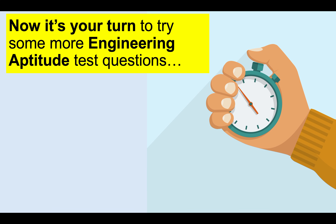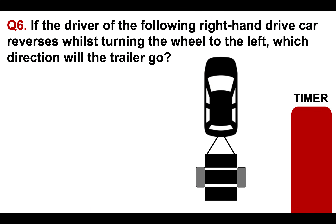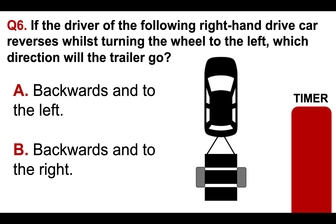Now it's your turn to try some more engineering aptitude test questions. Please put your answers to questions six, seven, and eight in the comments section below the video. This is a tough one. Question six: if the driver of a right-hand drive car reverses whilst turning the wheel to the left, which direction will the trailer go? Is it A: backwards and to the left, or B: backwards and to the right? Put your answer to question six in the comments section below.